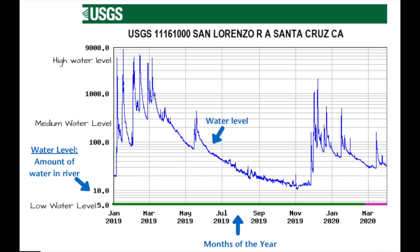Let's take a look at this hydrograph and get to know the information on it. Starting on the left-hand side, going from bottom to top, you will see some numbers: 5, 10, 100, 1000, and all the way at the top, 9,000. That's telling us the amount of water that's in the river. Five is telling us there's a lower water level, between 100 and 1000 is a medium water level, and all the way up to 9,000 is our high water level.